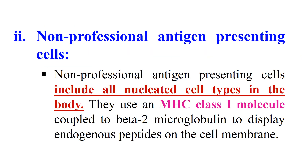The second category of antigen presenting cells is non-professional antigen presenting cells. All nucleated cells come under this category. They express class 1 MHC molecules coupled to beta-2 microglobulin, which display endogenous peptides on their cell membrane. These peptides originate within the cell itself. Cytotoxic T cells are able to interact with these endogenous antigens presented via class 1 MHC molecules. Non-professional antigen presenting cells do not express class 2 molecules. However, antigen presentation to T helper cells via MHC class 2 is not only restricted to professional APCs — other leukocytes including granulocytes like mast cells and neutrophils can also do this.